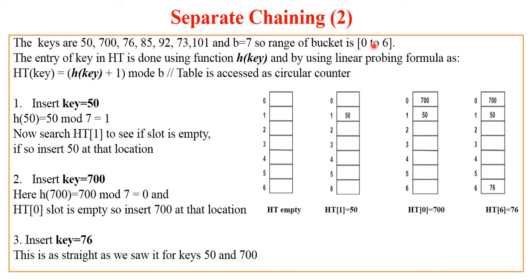We are having a bucket range from 0 to 6 as bucket size is 7, and again using the same circular method or counter method, we will try to calculate the hash address of the given key. Now let us start with inserting key equal to 50.